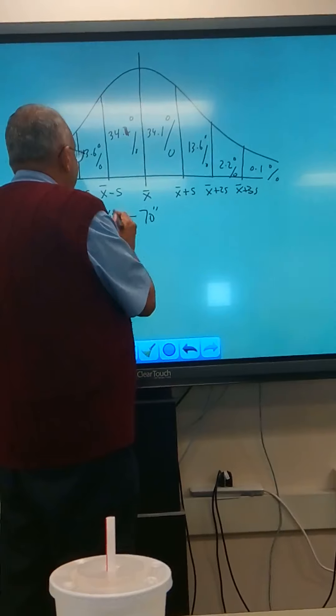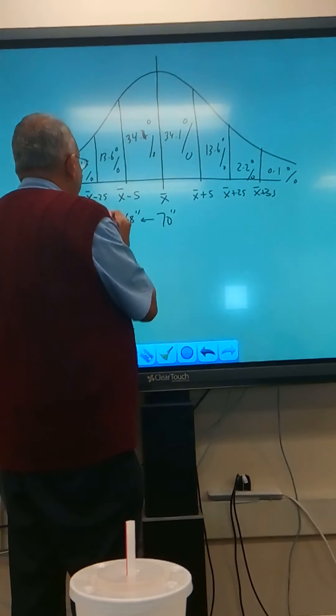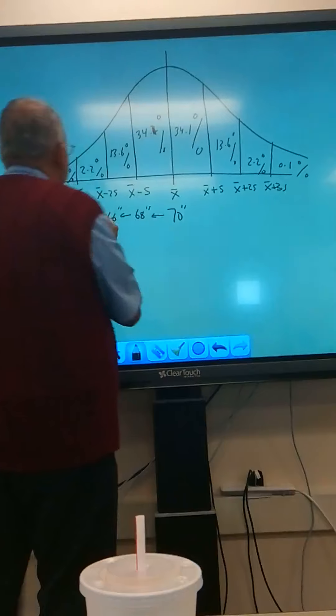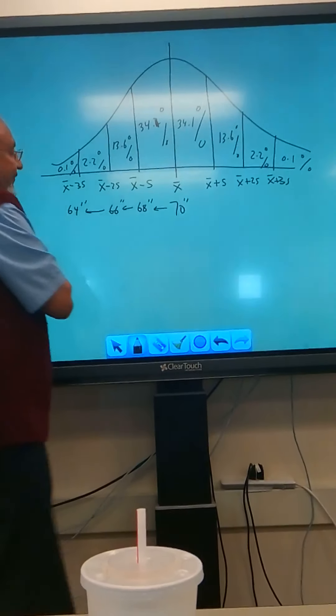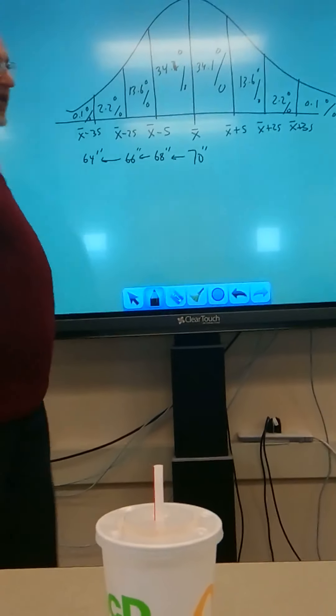Some guys were 68 on this side, and what? 66. And shorter guys were what? 64. And then some were less than 64.